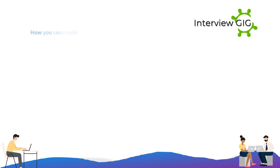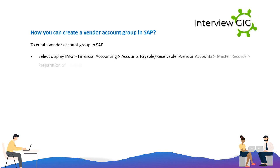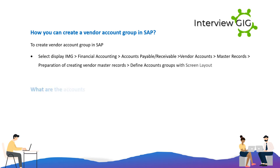How can you create a Vendor Account Group in SAP? To create a Vendor Account Group in SAP, select: Display IMG > Financial Accounting > Accounts Payable/Receivable > Vendor Accounts > Master Records > Preparation of Creating Vendor Master Records > Define Account Groups with Screen Layout.